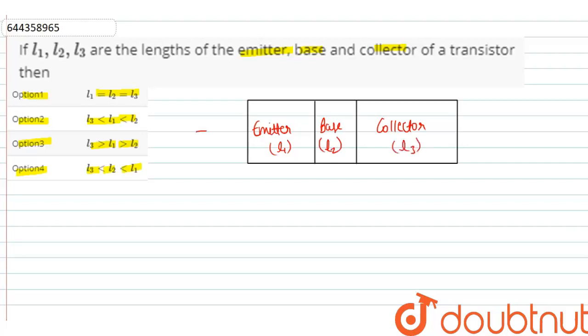Here in this diagram, we can clearly see that L3 is greater than L1, which is greater than L2. So this is the correct option.